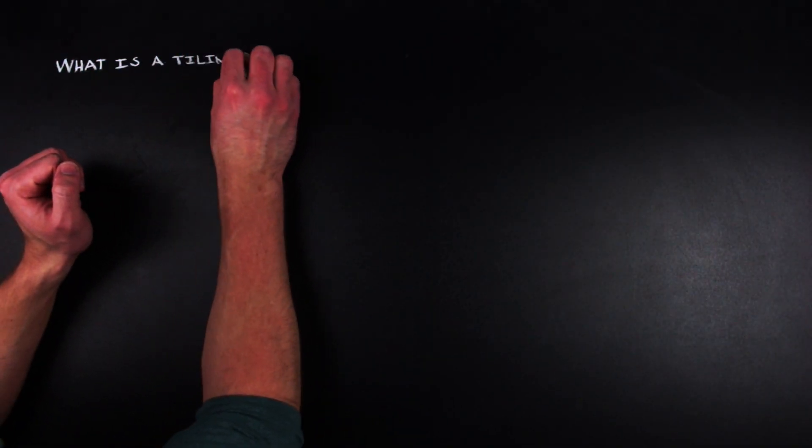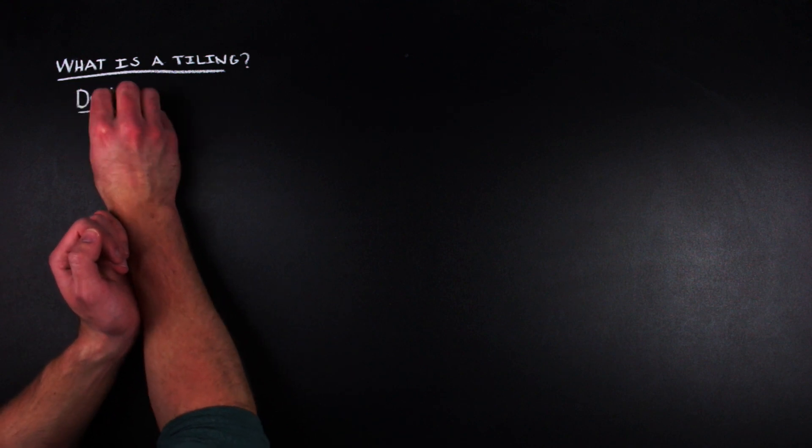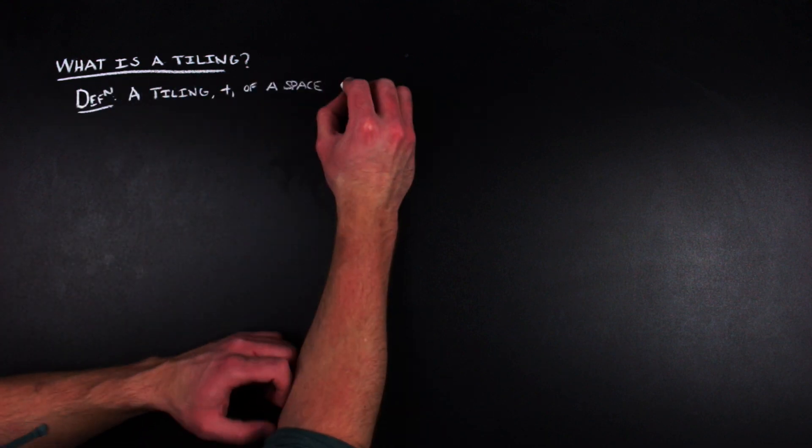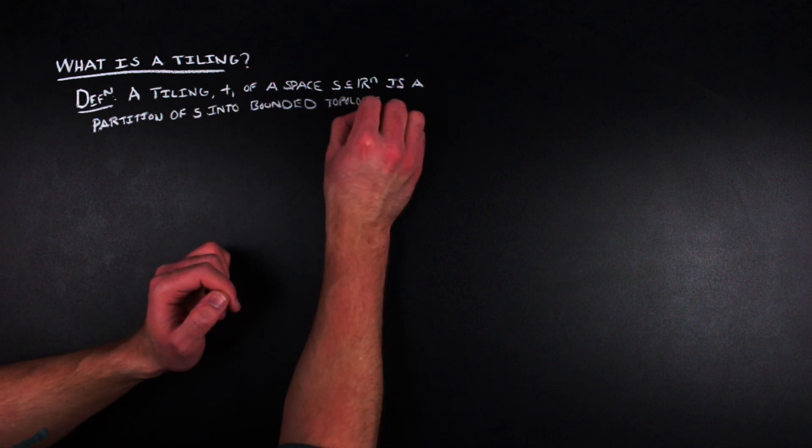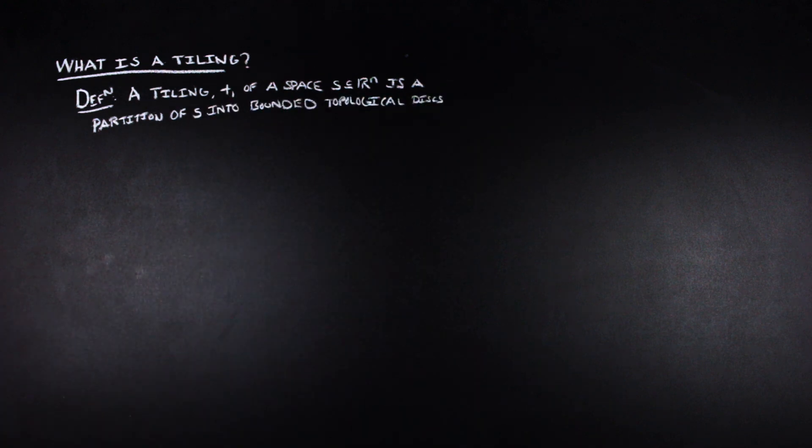So what is a tiling? In one of the more abstract and general forms of its definition, a tiling T of a space S, a subset of R^n, is a partition of S into bounded topological disks. If you don't know what any of those words are in this context, I'm going to go through a few of them to hopefully give you that context, because this video is about definitions.